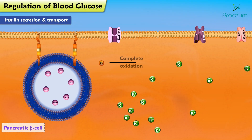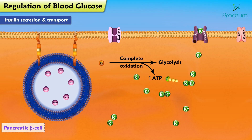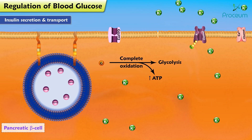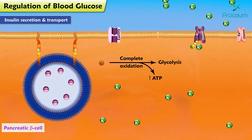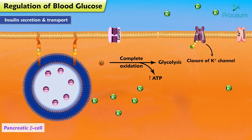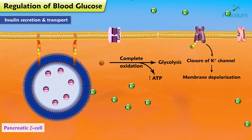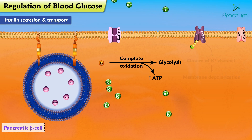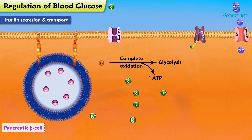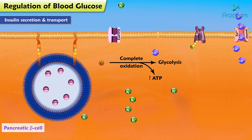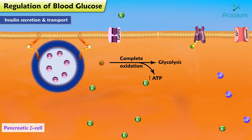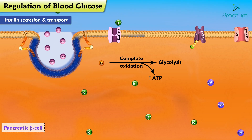Once inside the cell, glucose is metabolized to ATP, which closes ATP-sensitive potassium channels on the plasma membrane. Closure of this potassium channel leads to membrane depolarization, which then opens voltage-gated calcium channels. The increase in intracellular calcium concentration leads to exocytosis of insulin storage vesicles.